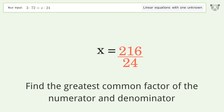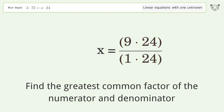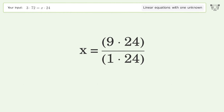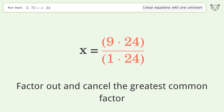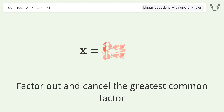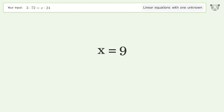Find the greatest common factor of the numerator and denominator, then factor out and cancel the greatest common factor. The final result is x equals 9.